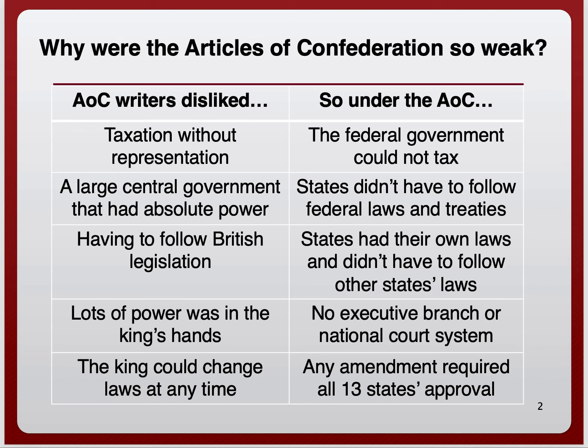Going back to the American Revolution, one of the big reasons the colonists rebelled against Britain was taxation without representation. So under the Articles of Confederation, the federal government could not tax the states. Tax dollars pay for things like an army and infrastructure. That was intentionally written that way because the colonists hated paying taxes to Britain. The colonists also hated the idea of any strong central government, like the monarchy Britain had. Because of that, the states did not have to follow federal laws or treaties — they could act on their own.